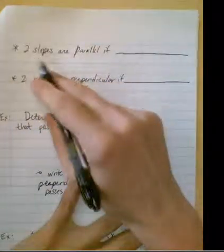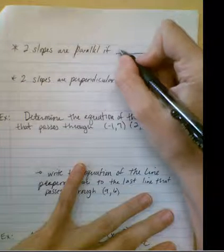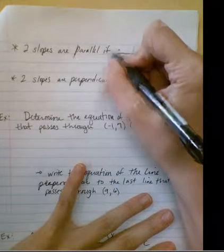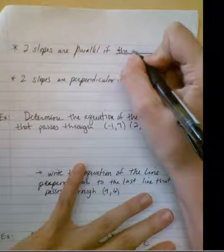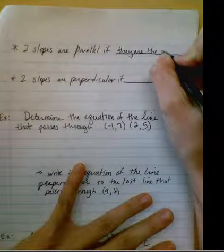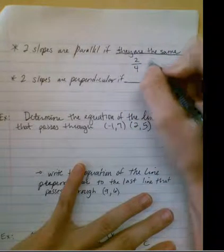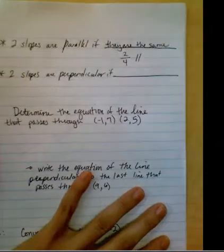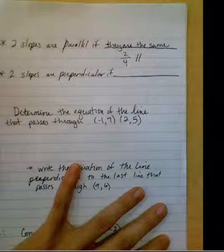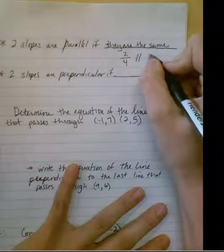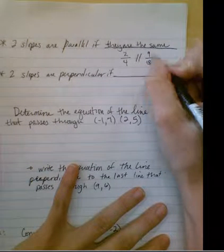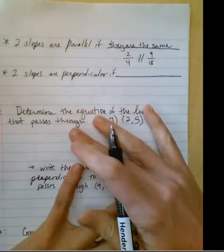Remember two slopes are parallel if they are the same. For example, the slope 2 fourths is parallel to anything that reduces down to a half, so that might be like something like 9 eighteenths even. They all equal one half, so they must be parallel.